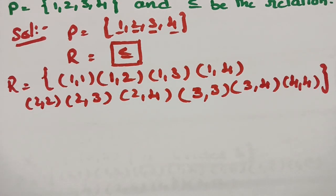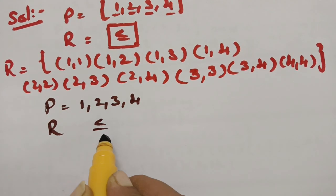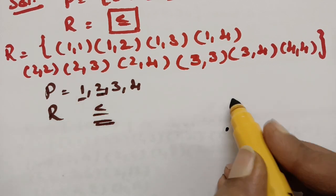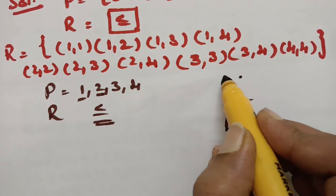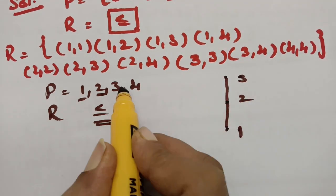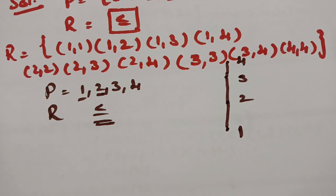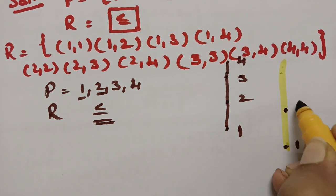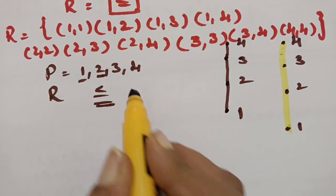Now we draw the Hasse diagram. P = {1, 2, 3, 4} and the relation is less than or equal to. The minimum element is 1. Since 1 is less than 2, make an edge. Since 2 is less than 3, make an edge between 2 and 3. Since 3 is less than 4, make an edge between 3 and 4. This gives us a simple linear chain: 1 — 2 — 3 — 4. This is the Hasse diagram for the relation less than or equal to.